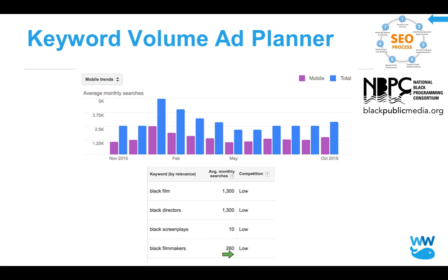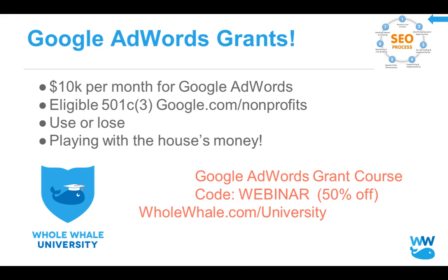For anybody that is a 501(c)(3) — at least in the United States — you get $10,000 per month to use or lose on Google AdWords search advertising. You can go to google.com/nonprofits. We have an online course that trains people soup-to-nuts how to apply for and maximize this Google AdWords grant. It's a phenomenal tool — you get free money to spend on advertising.